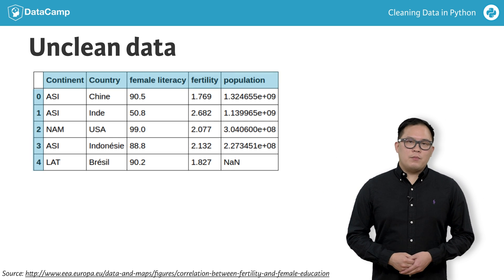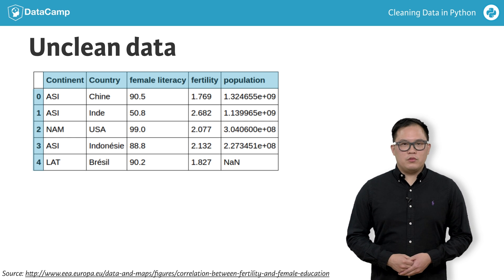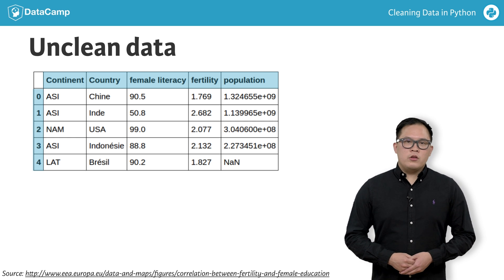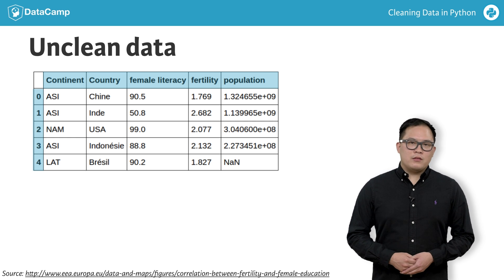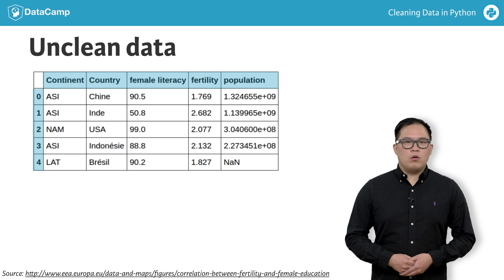An index in pandas is the basic object storing the row labels. You can reference indexes for rows and columns by their labels or by integer.